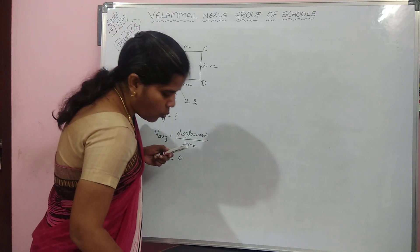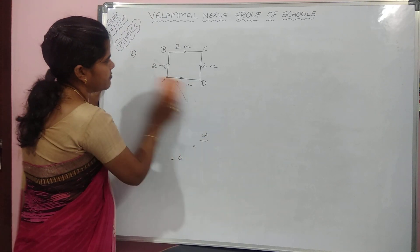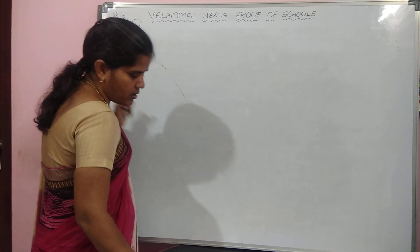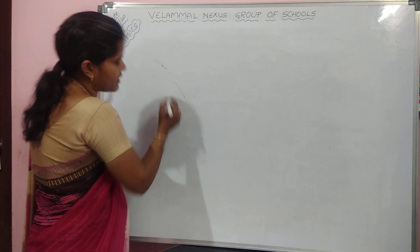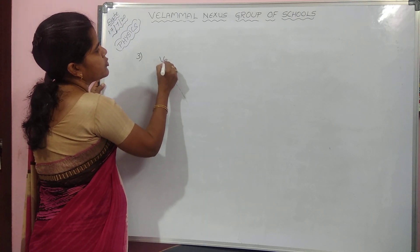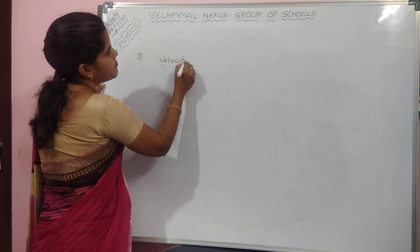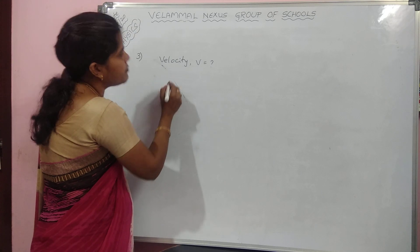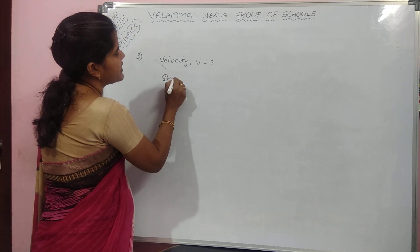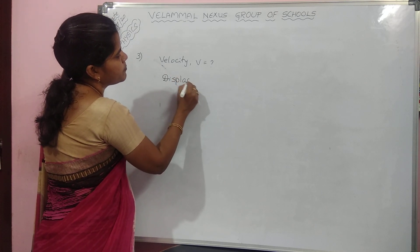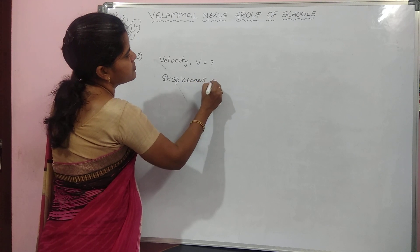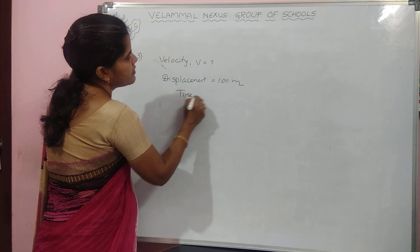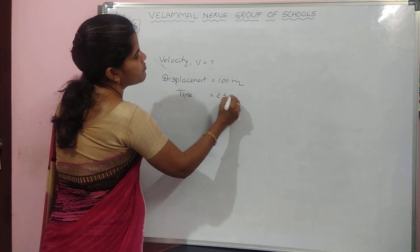Next question: What is the velocity of a car that has travelled 100 meters? Displacement is equal to 100 meters. Time taken is 2.5 seconds. Find the velocity.